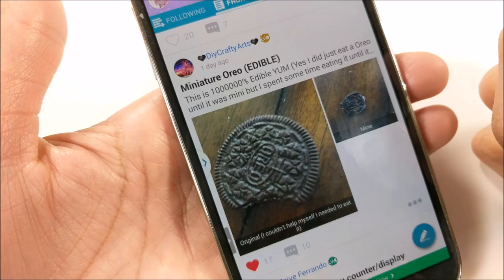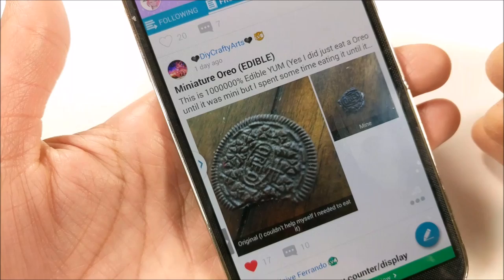And then, oh, here's one of my favorites. So this is a how to make a miniature edible Oreo. Well, you just take a regular Oreo cookie and you eat it until it becomes a miniature. Pretty clever!